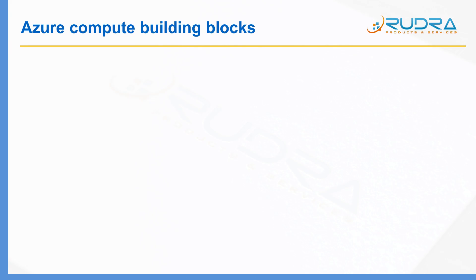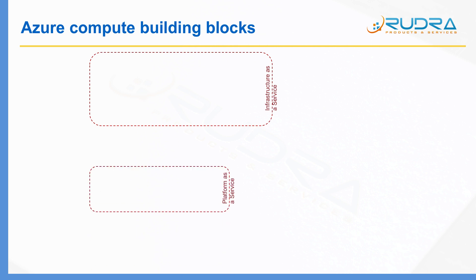The first one is Infrastructure as a Service, the second one is Platform as a Service, and the third one is Serverless Services. Within Infrastructure as a Service, the most fundamental building block is Azure Virtual Machine.